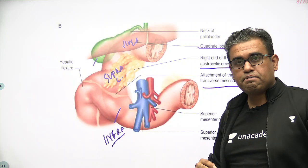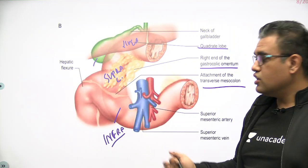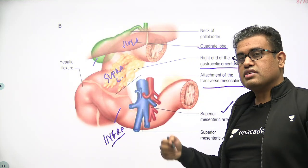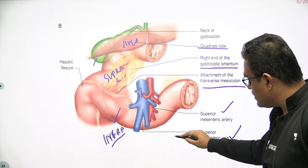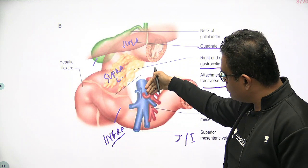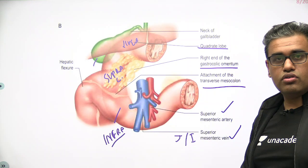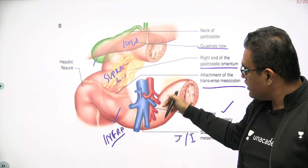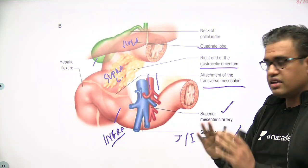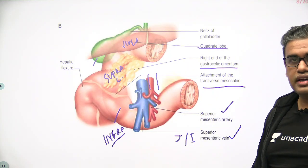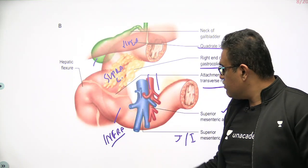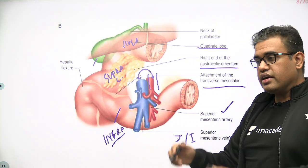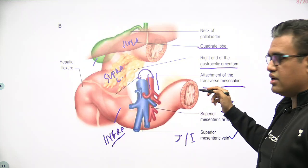Very important: two vessels cross the third part of the duodenum anteriorly. To the right lies the superior mesenteric vein and to the left lies the superior mesenteric artery. These vessels pass in front of the third part duodenum because they supply the jejunum and ileum — intraperitoneal structures — so they travel inside the mesentery. This is the basis of superior mesenteric artery syndrome, or nutcracker syndrome: if the angle between the SMA and aorta decreases, it compresses the third part duodenum causing partial obstruction. Also remember: if the arrangement is reversed — vein on the left, artery on the right — it indicates malrotation of the midgut.